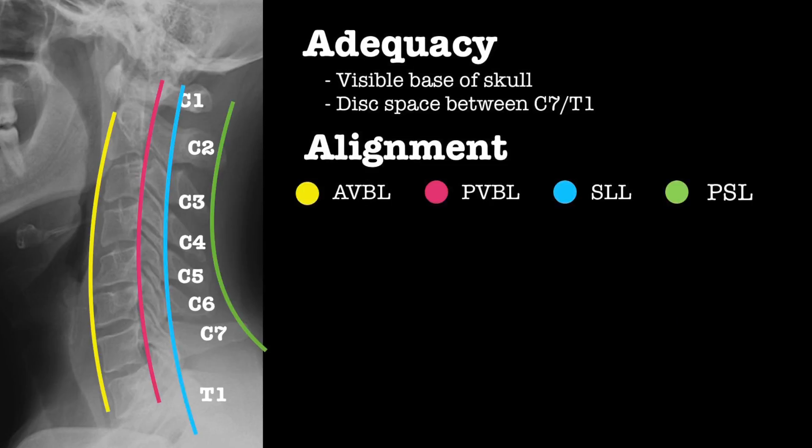For alignment, look at the anterior vertebral line (in yellow), the posterior vertebral line (in pink), the spinal laminar line (in blue), and the posterior spinous line (in green).